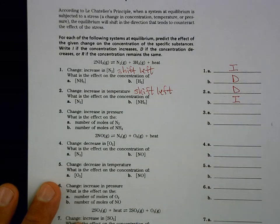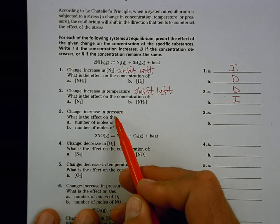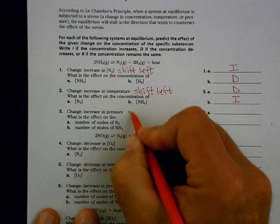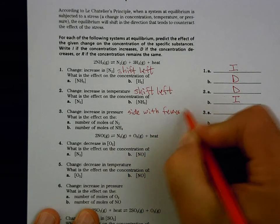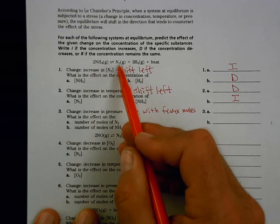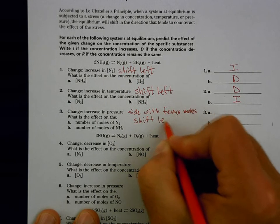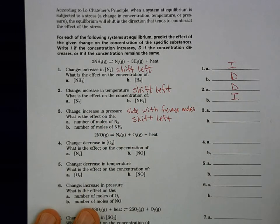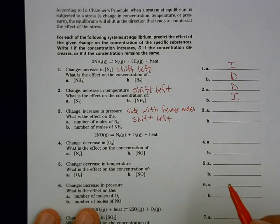Number three: increase in pressure. When we increase pressure, we go to the side with fewer moles. On the right there are two moles; on the left there are four — one plus three. So this is also a shift left. Since we shift left, N₂ will decrease and NH₃ will increase.